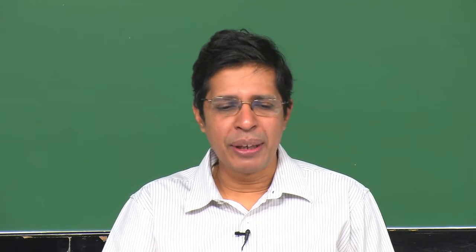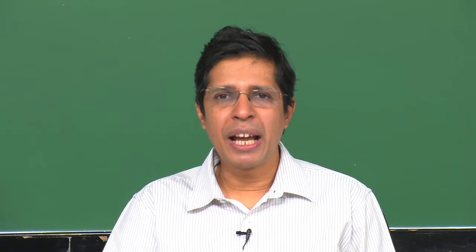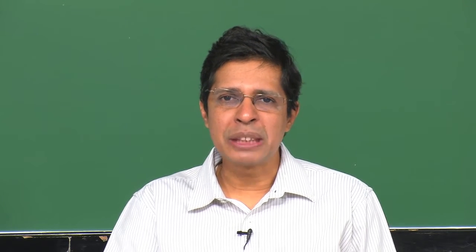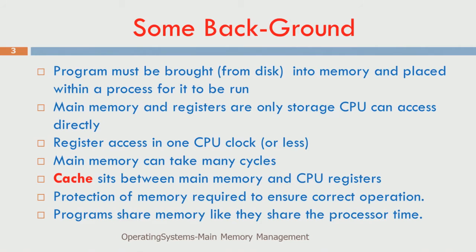According to the von Neumann model, the program must be brought from the disk into memory and placed within a process for it to run. When a program is brought from disk into memory, it actually becomes a process — a program in execution — and then starts executing.